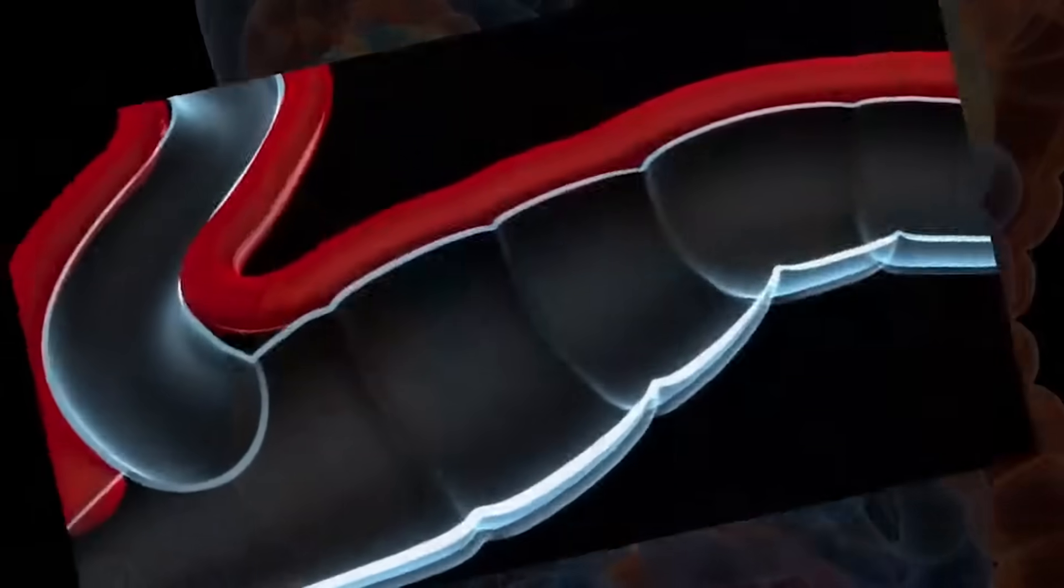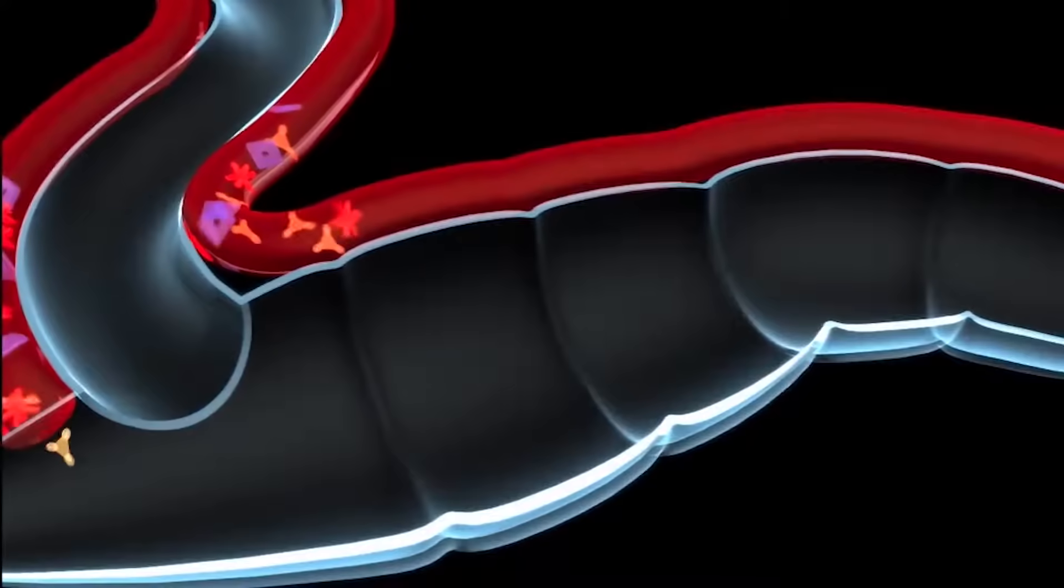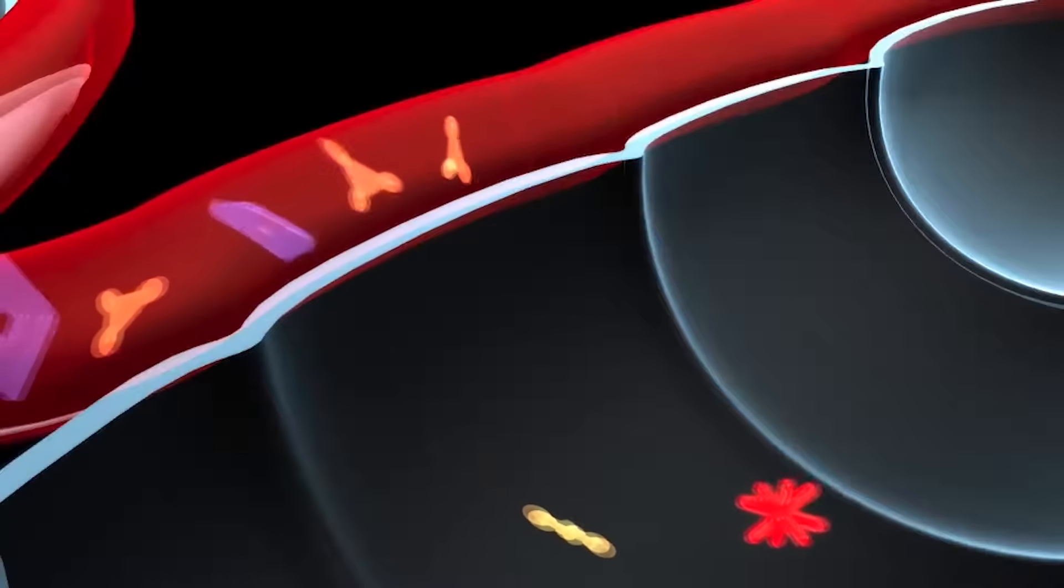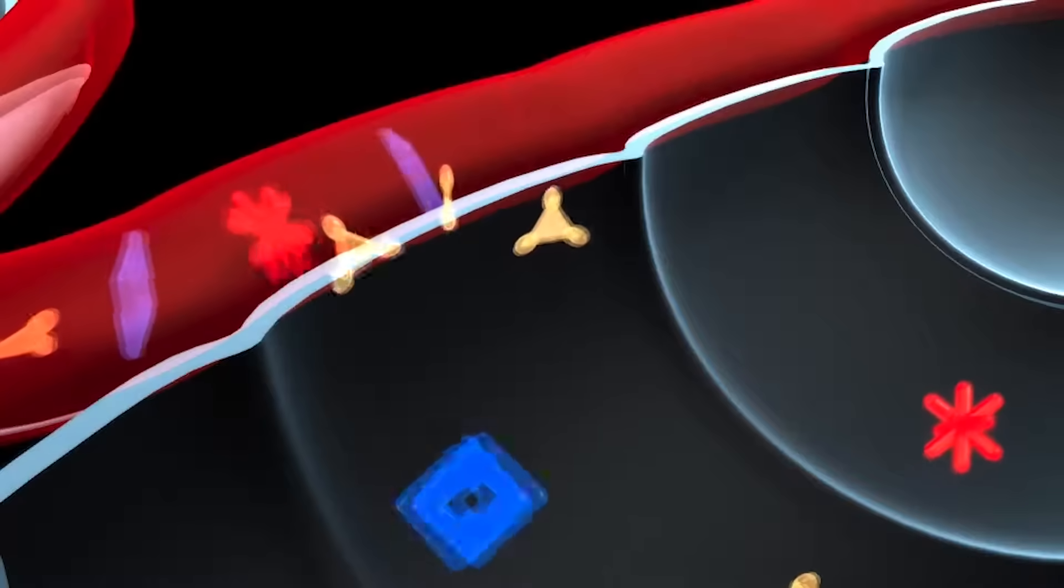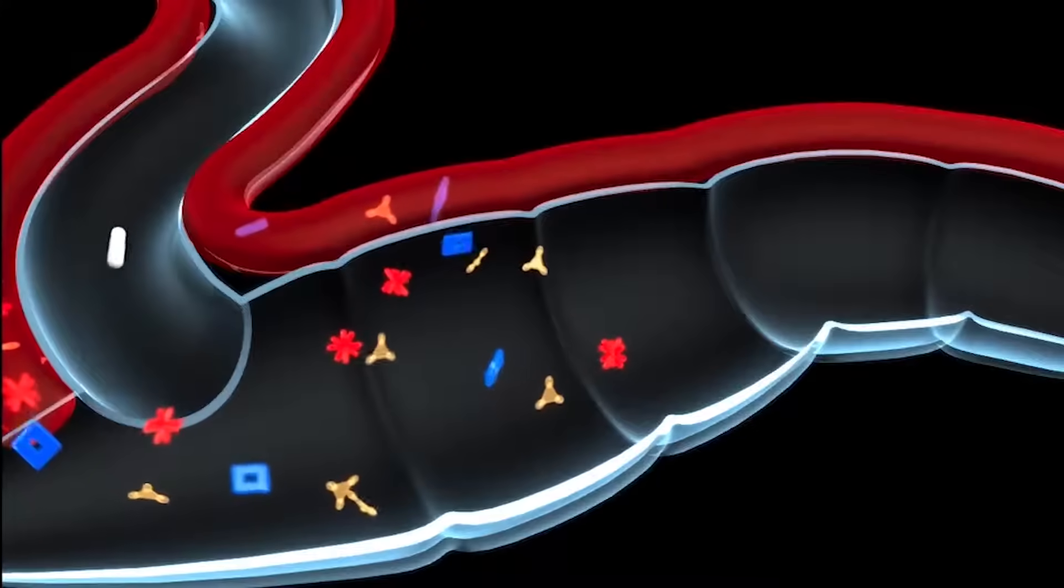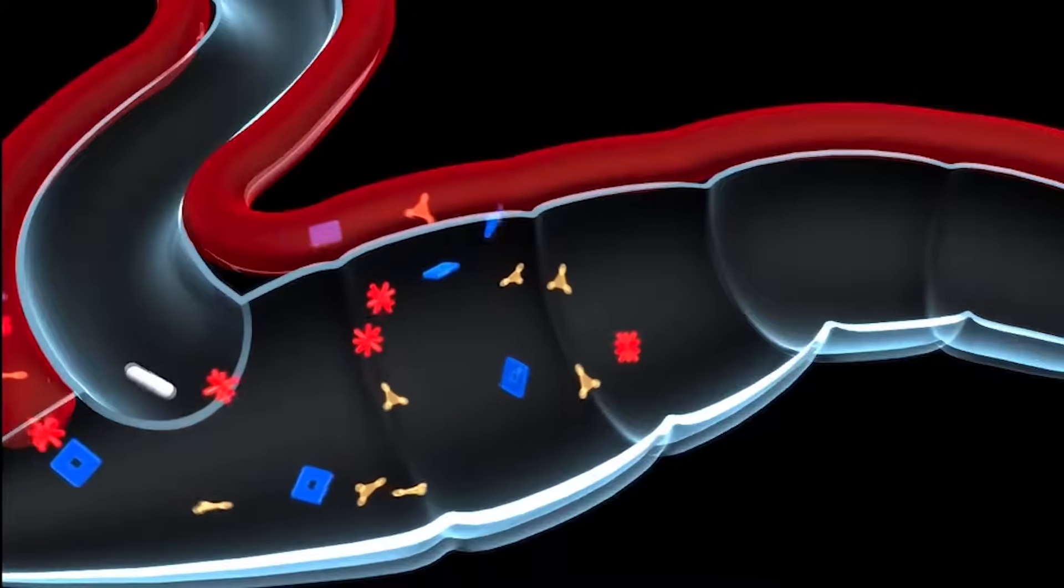When a buildup of nitrogenous waste occurs in the bloodstream, uremic toxins diffuse across the intestinal lining into the colon because of the extensive network of blood vessels surrounding it. Following a journey through the upper GI tract,